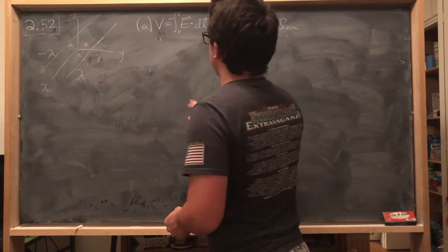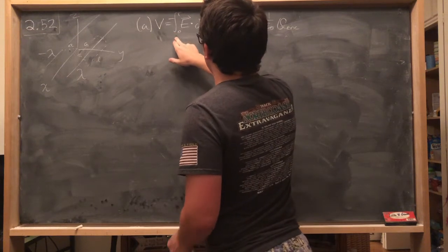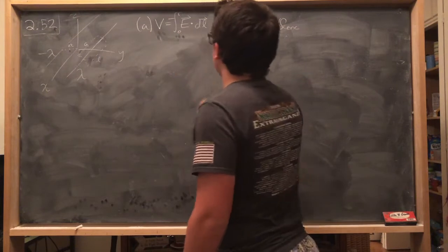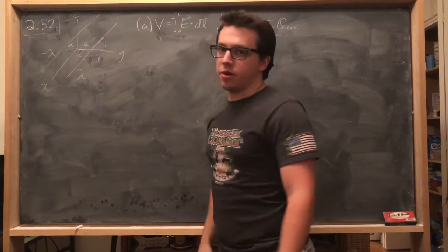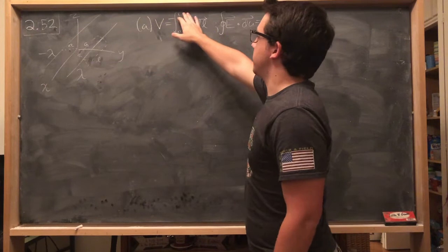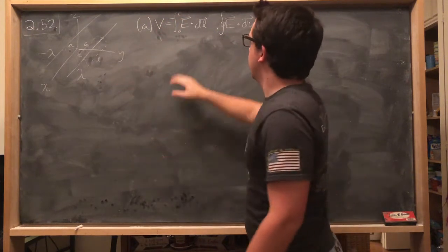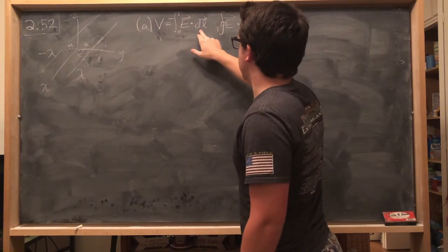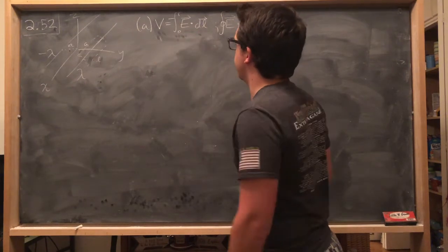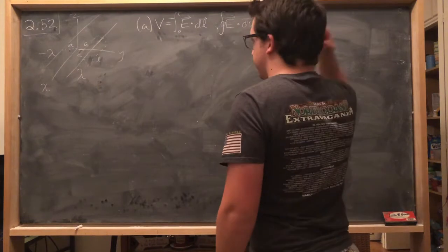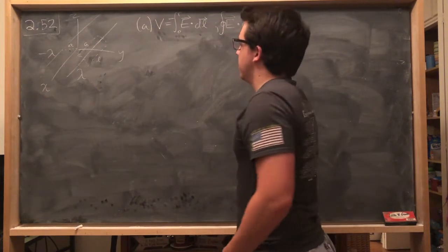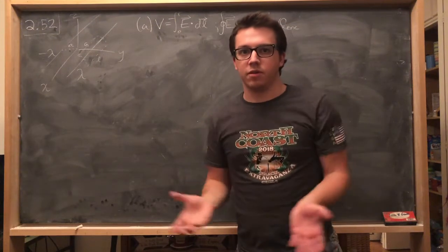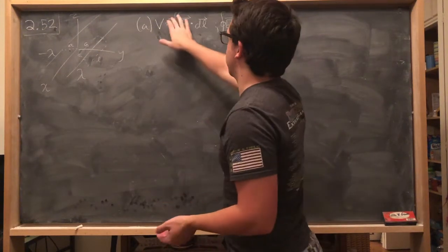And the standard formulation for potential is this. It's an integral from some reference point which we're setting as the origin to some other point which we just want to be any xyz position. And it's the dot product of your electric field with dL. And that gives you your potential. And it's negative to make sure that the signs work out, so that if, for example, you have a positive charge distribution, you end up with a positive potential. That's why we have the negative there.